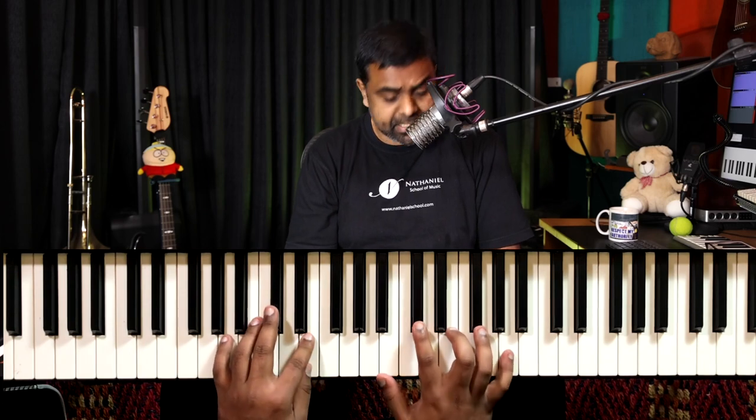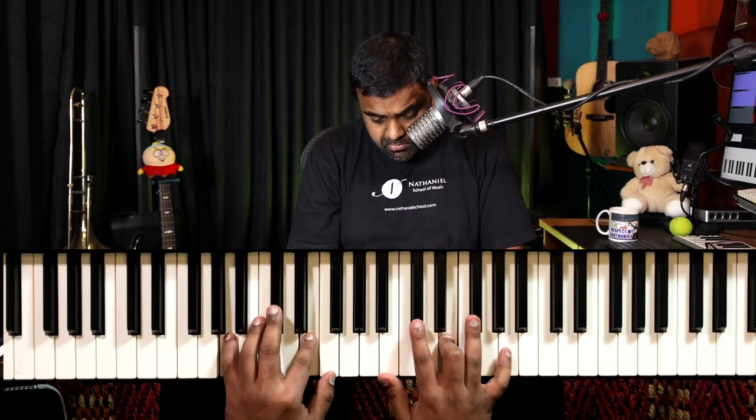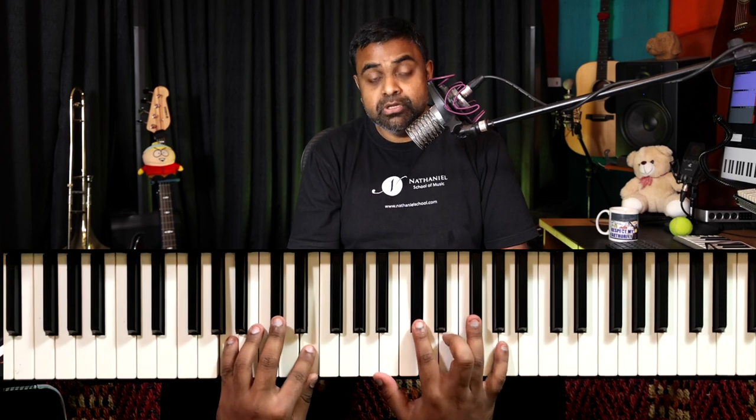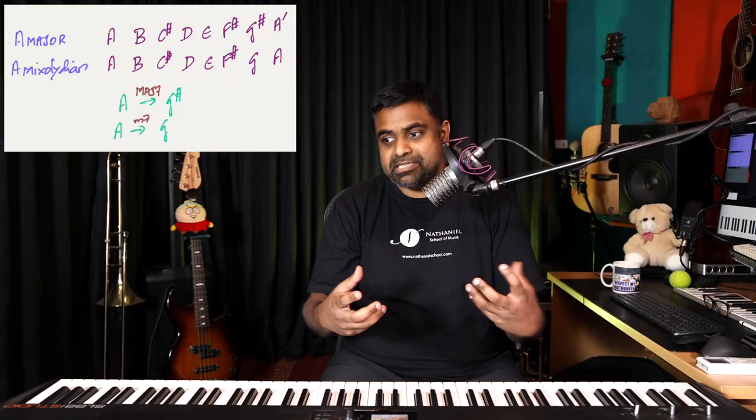So if you develop a lick: phrase one has that major seventh. Phrase two is like more of a brave answer. It's almost like two people are talking to each other — two characters or two personalities — just built by the interaction of a major seventh and the more powerful dominant seventh, or minor seventh as another way we can call it.